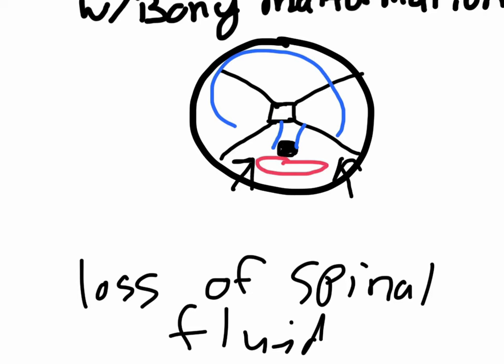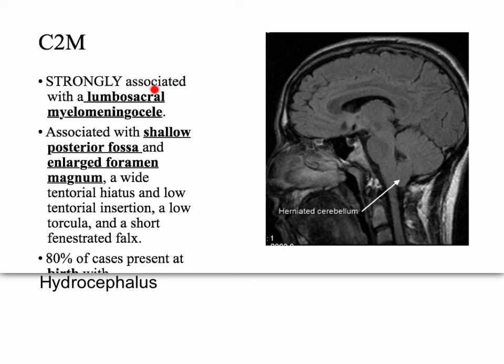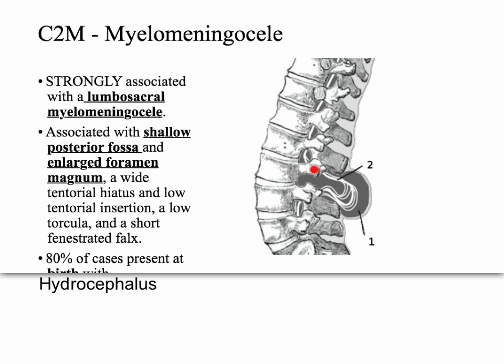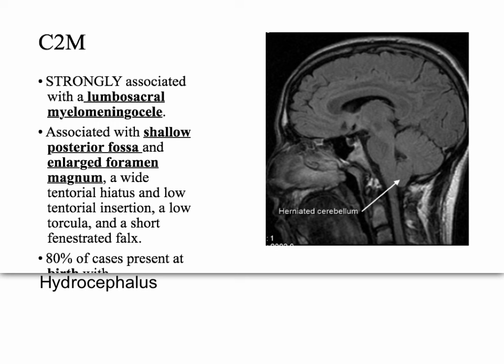Chiari type 2 malformations are strongly associated with lumbosacral myelomeningocele — that's the major etiology. A myelomeningocele is when you have herniation of both the spinal cord myelin and the cauda equina itself. If there's no spinal tissue in the herniation, it's called a meningocele. This falls under the larger family of neural tube defects. Also associated with Chiari type 2 is a shallow posterior fossa and an enlarged foramen magnum — these are caused by the Chiari malformation, not the other way around.